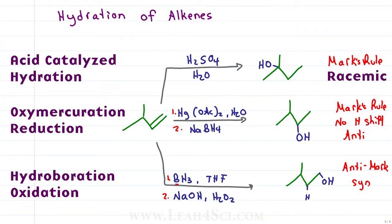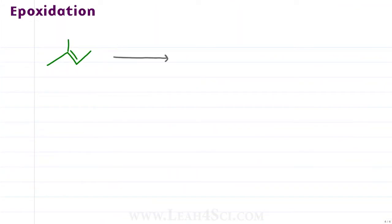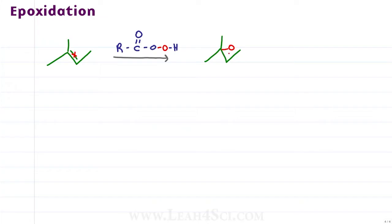The following alkene reactions are less common but still worth knowing, starting with epoxidation. Epoxidation uses a peracid, which has an extra oxygen in what looks like a carboxylic acid. This adds across the pi bond so that oxygen grabs onto both carbon atoms, giving us a three-membered ring called an epoxide. Given that oxygen is holding both carbons at the same time, this is a syn addition.